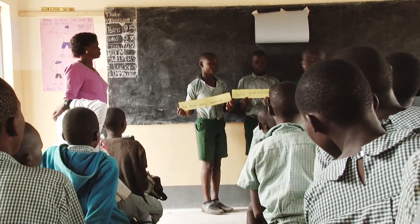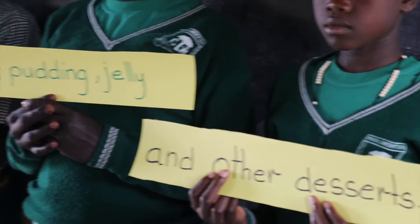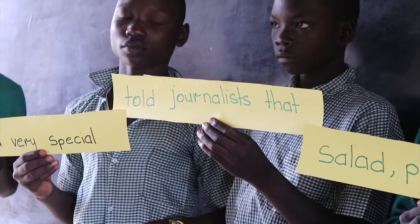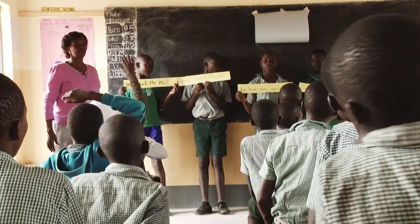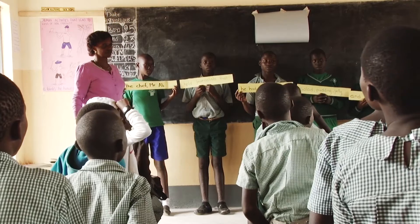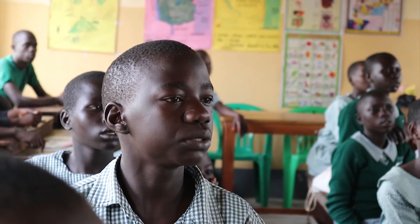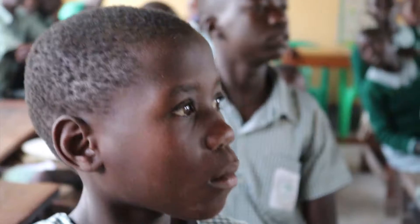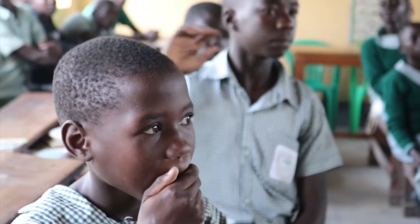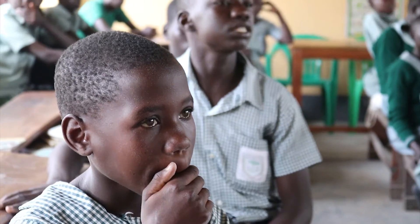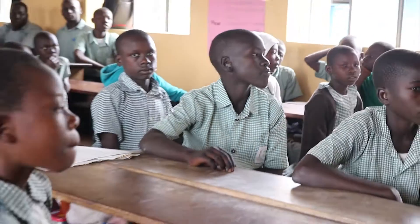Students come to the front one by one to arrange the sentence parts. 'Told journalist that' — is he correct? Yes. 'He had very special' — is that correct? Yes, Ibrahim, you're in your right position. Scholar is in her right position. The last part: 'And other desserts.' Now we are going to read the rearranged sentence together.